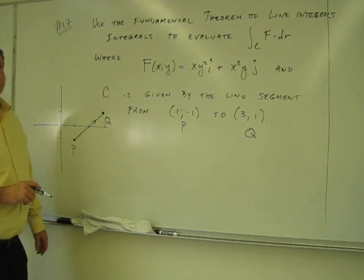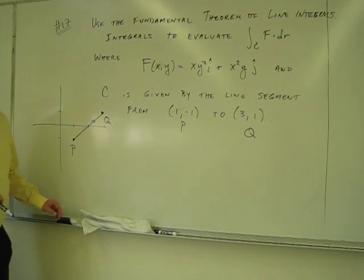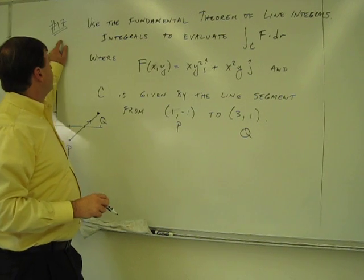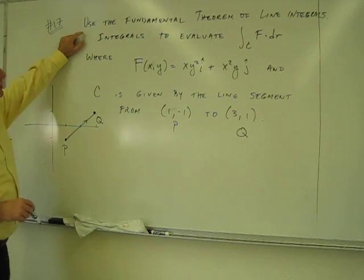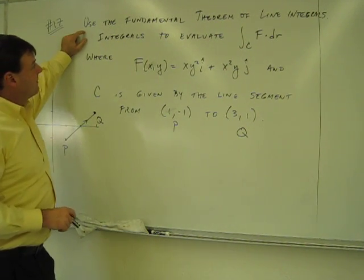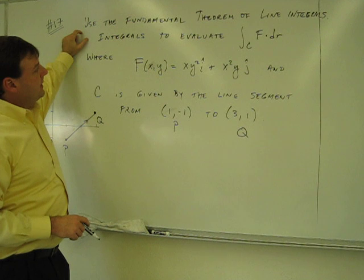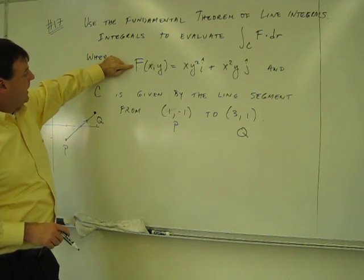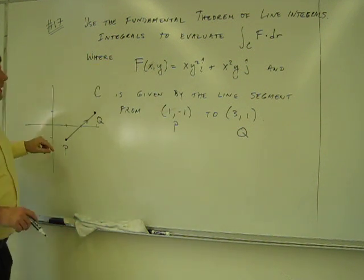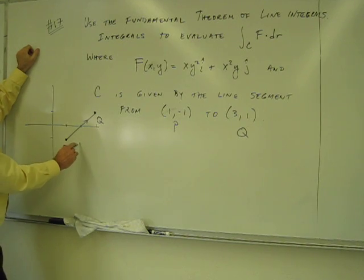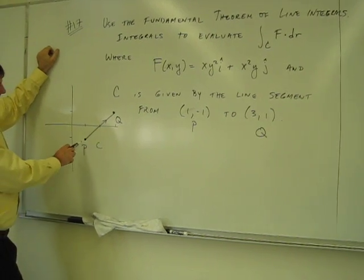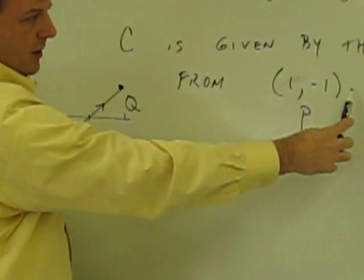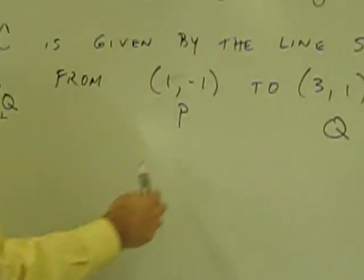Hi class. I'm going to work out some of these problems and review for you. This is number 17, and it asks you to use the fundamental theorem of line integrals to evaluate this integral, where this is the vector field, and the contour we're going to traverse is this line segment from P to Q, where P and Q are given by those coordinates.